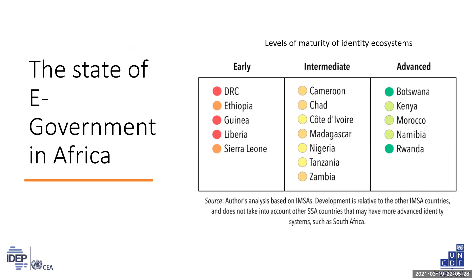Many African countries have decided to replace their fragmented functional schemes with a fully digital foundational system. South Africa has so far implemented the most advanced and comprehensive digital ID system on the continent. Regional bodies in West and East Africa have been piloting programs for interoperable EID systems that facilitate cross-border travel and services. Given the complexity, cost, and time needed to set up a foundational digital identity system, the challenge is to prevent wasted investment in redundant and conflicting functional systems.